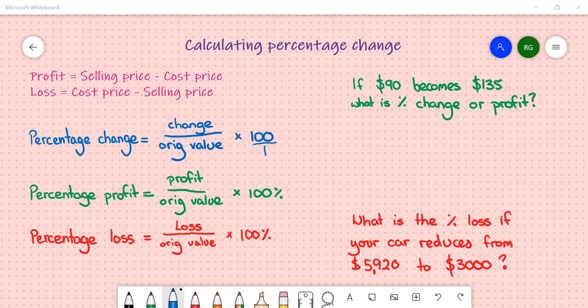Percentage profit in green is the profit amount, so how much money you make, divided by its original value, again, multiplied by 100. And percentage loss in red is the loss amount divided by the original value.